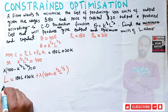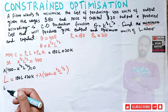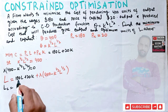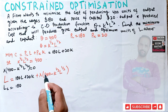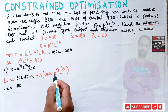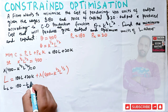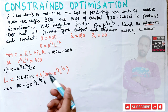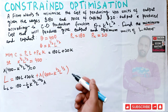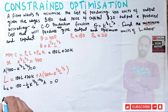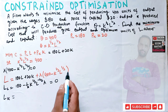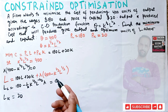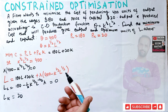Taking the partial derivative with respect to L: the derivative of 180L is 180. The derivative of the constraint term gives −λ·(1/2)·K^(1/2)·L^(−1/2). Setting equal to zero: 180 − λ·(1/2)·K^(1/2)·L^(−1/2) = 0. This is equation one. Taking the partial derivative with respect to K: the derivative of 20K is 20. Setting equal to zero: 20 − λ·(1/2)·K^(−1/2)·L^(1/2) = 0. This is equation two.